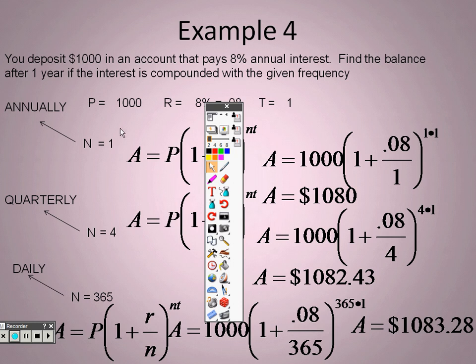Just something simple to keep in mind: notice as n goes up, so does the money. n was 1 and look, it was $1080. When n was 4 times a year it was $1082.43, and when n was 365, notice how it's now $1083.28.